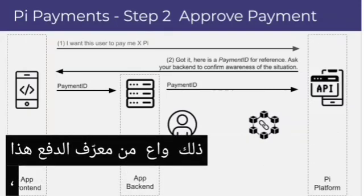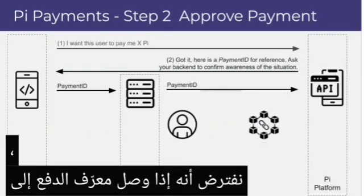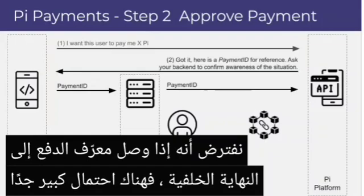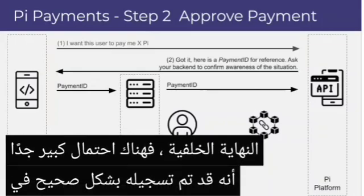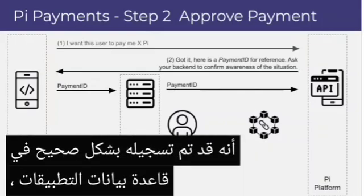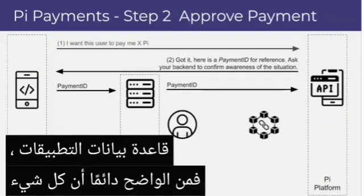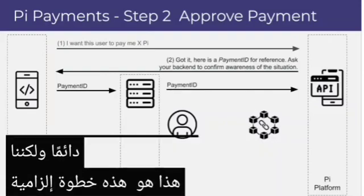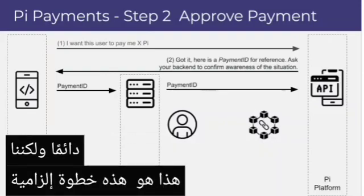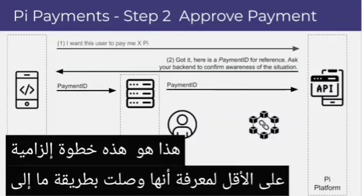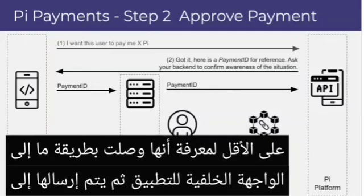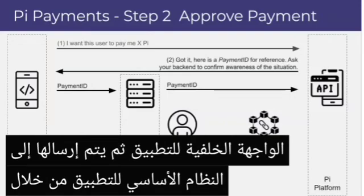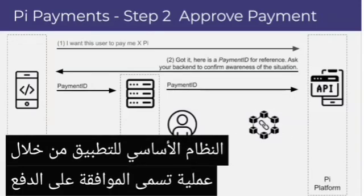We're assuming that if the payment ID reaches the app back end, there is a very high likelihood that it has been correctly recorded in the app's database. This is a mandatory step to at least know that it somehow reached the app back end, and then it gets sent to the Pi platform through a process called payment approval.